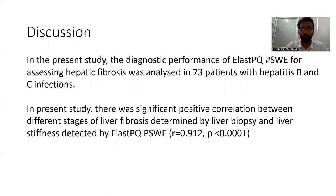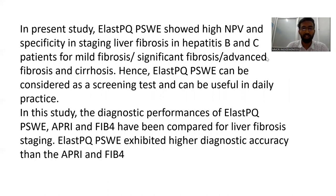Discussion. In the present study, the diagnostic performance of ElastPQ shear-wave elastography for assessing hepatic fibrosis was analyzed in 73 patients with hepatitis B and C infections. There was significant positive correlation between different stages of liver fibrosis determined by liver biopsy and liver stiffness detected by ElastPQ point shear-wave elastography, with R value of 0.912 and p-value less than 0.0001, which is strongly significant. ElastPQ point shear-wave elastography showed high negative predictive value and specificity in staging liver fibrosis for mild, significant, advanced fibrosis, and cirrhosis. Hence, it can be considered as a screening test and used in daily practice.